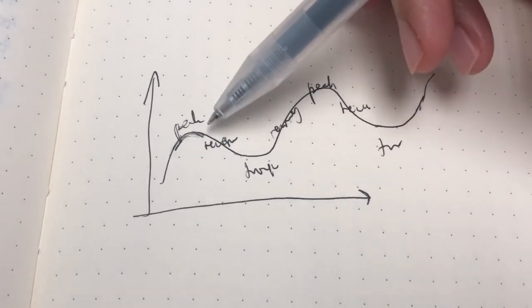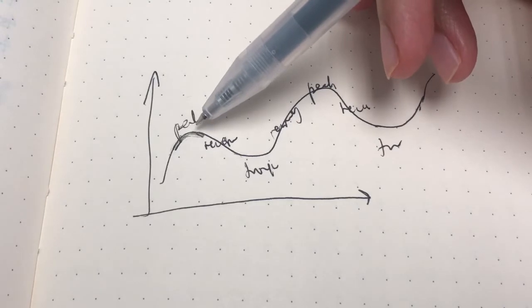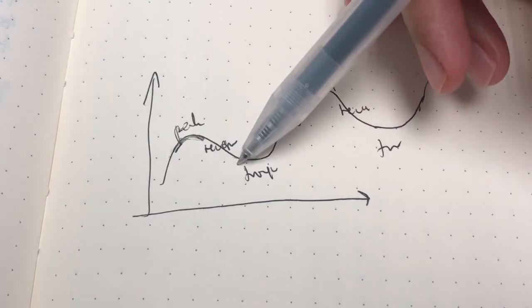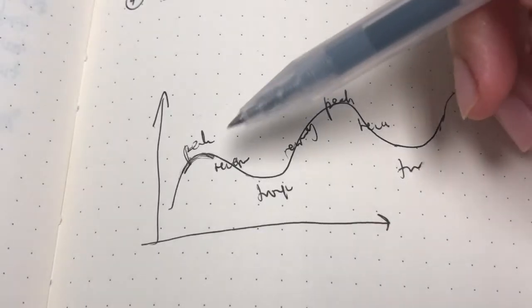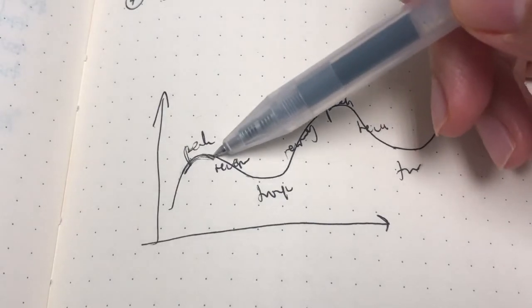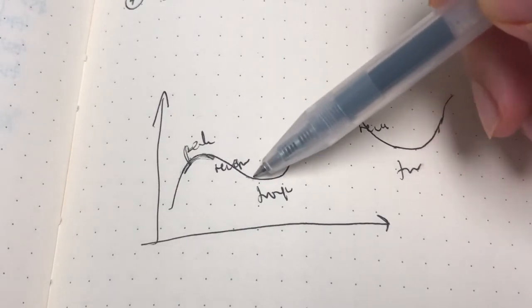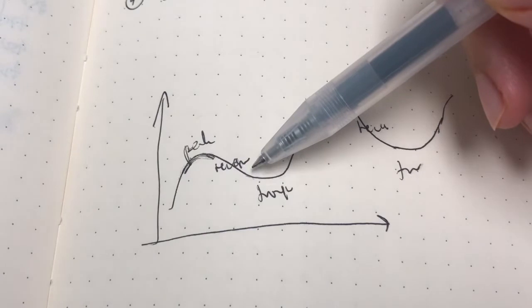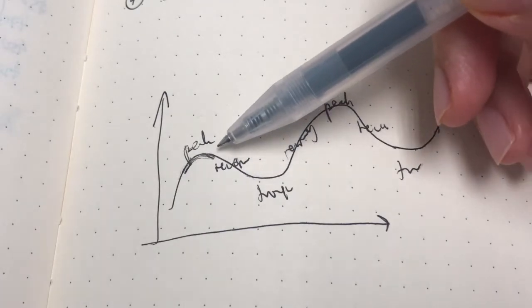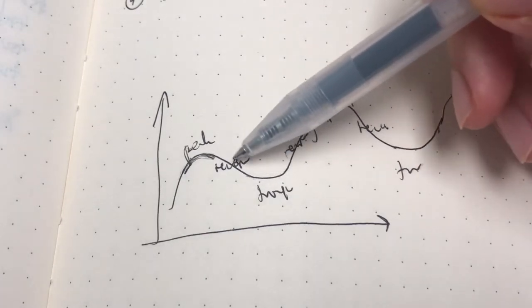When that happens, the contractionary fiscal policy may only deepen the recession further. Likewise, say the economy is experiencing a recession. The government would naturally implement an expansionary fiscal policy to solve this problem.